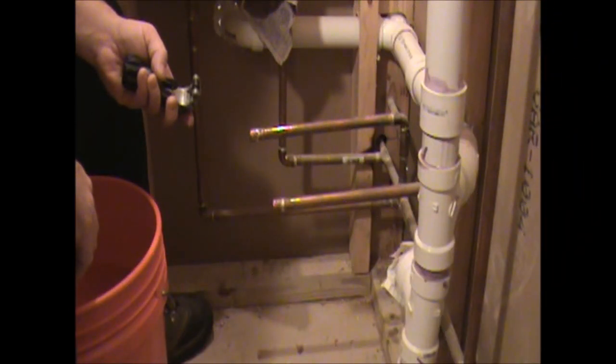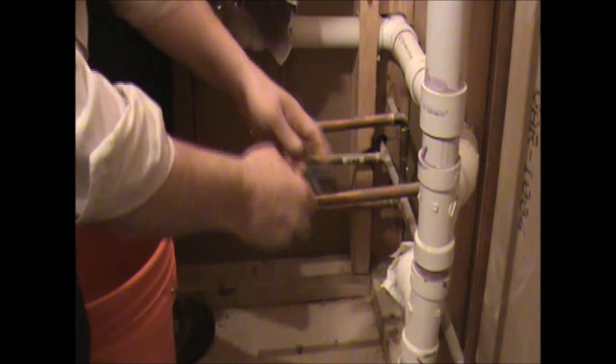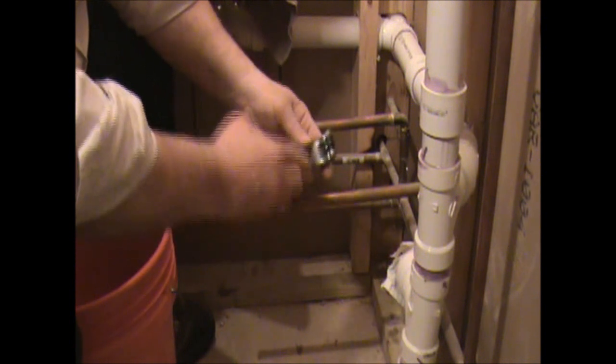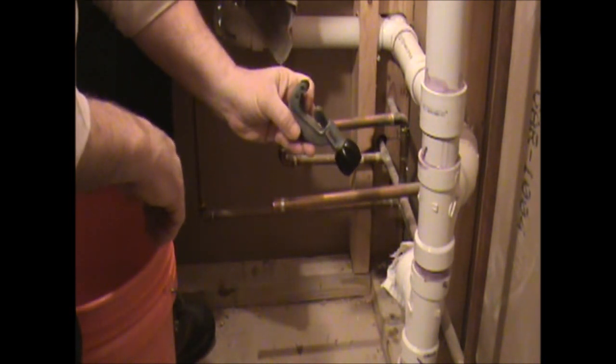So let's get started with the installation of our valve. Now that the water is shut off, the first thing you're going to want to do is you're going to want to cut your copper pipe. You're going to use a copper tubing cutter to do that.